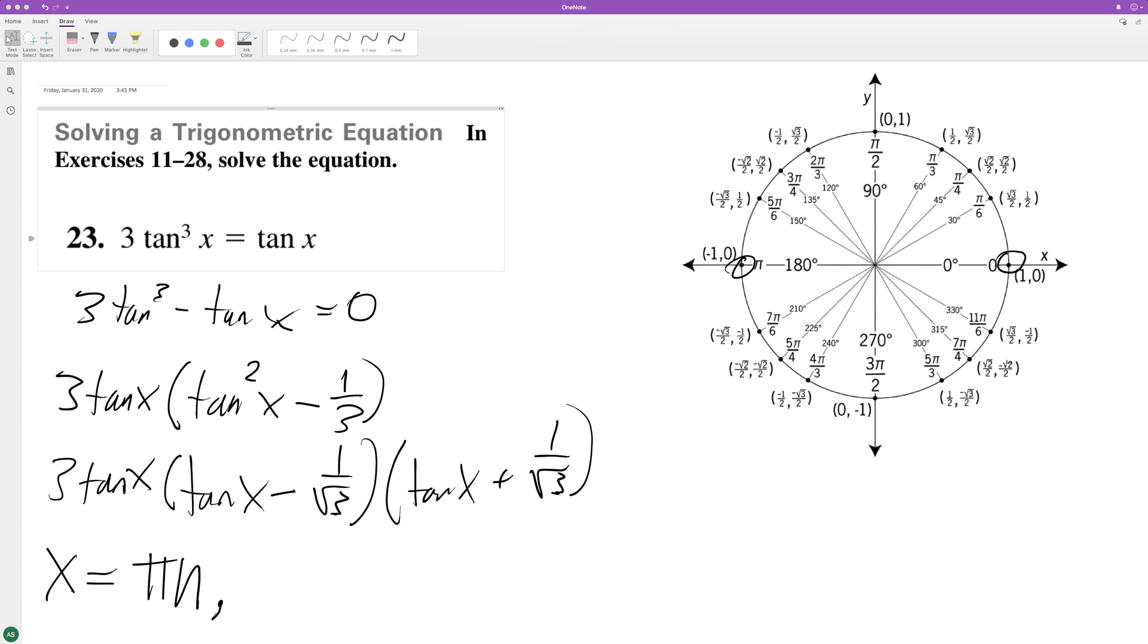And 11π/6, because what happens here is this is in the form x,y and tangent equals y over x.